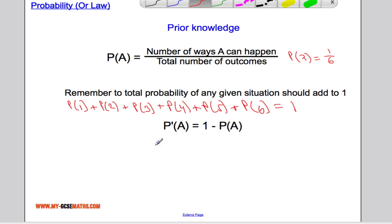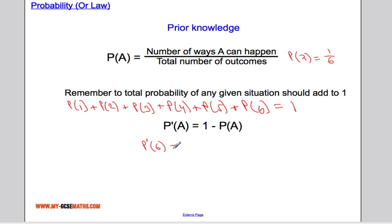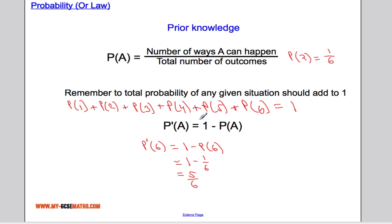Another thing you should know is that the probability of something not happening — written as P complement A — is one take away the probability that A does happen. For example, the probability of not getting a six when rolling a die is one take away one sixth, which is five sixths. You can think of it another way: if I don't get a six, I will get a one, two, three, four, or five — five ways out of six total outcomes.